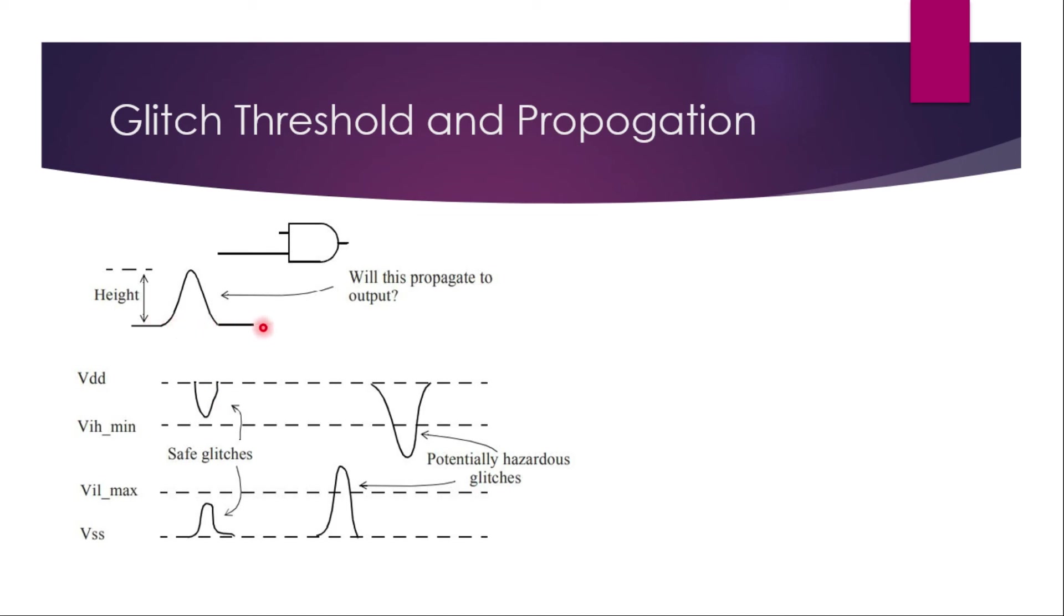There is also something called AC margin, which considers the width of the signal. AC margins are depending on many other things. One is the width of this glitch. And one more thing is the capacitance, the output capacitance or output load. As the capacitance increases, the glitch will not be seen at the output. And if the capacitance is lesser, then some amount of glitch will be transferred to the output.